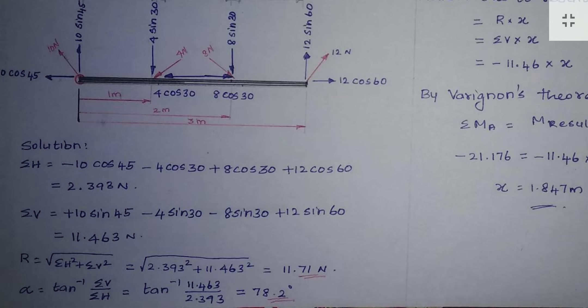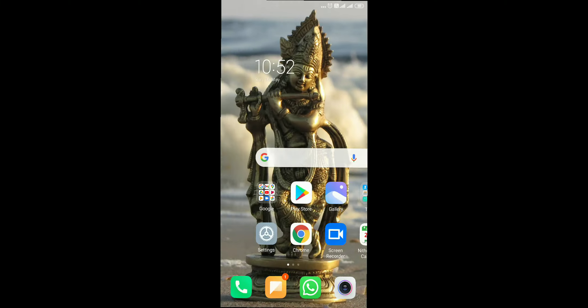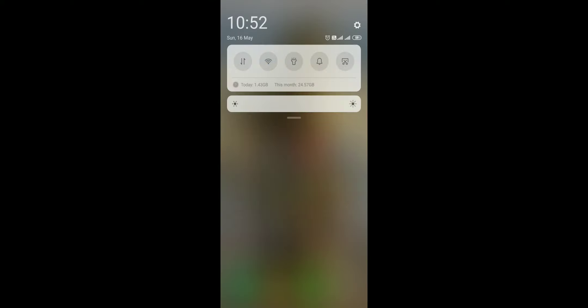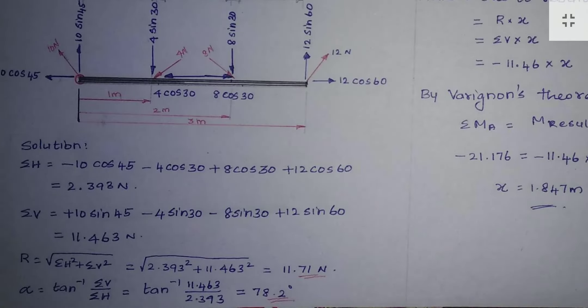Substituting into the resultant formula — square root of sigma-H squared plus sigma-V squared — we get a resultant of 11.71 Newton. To find the angle alpha, we use the formula: alpha equals tan inverse of sigma-V divided by sigma-H. Substituting gives us the angle value.